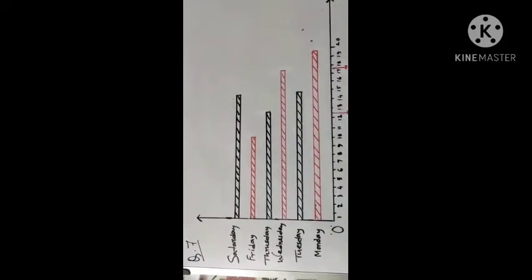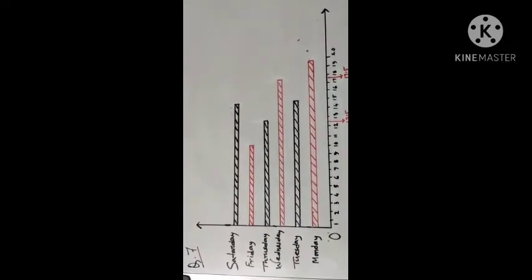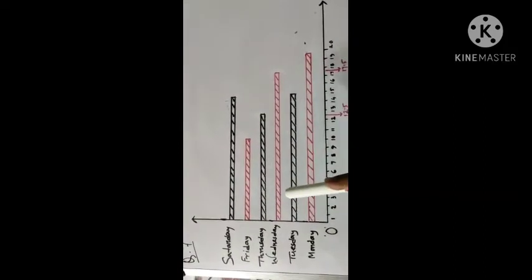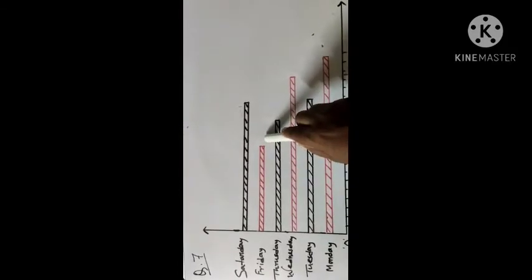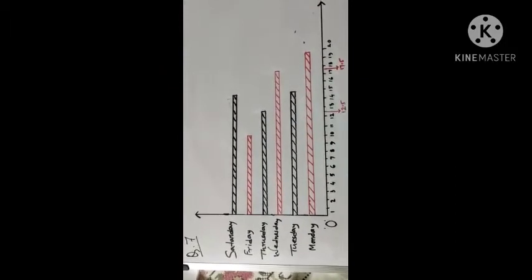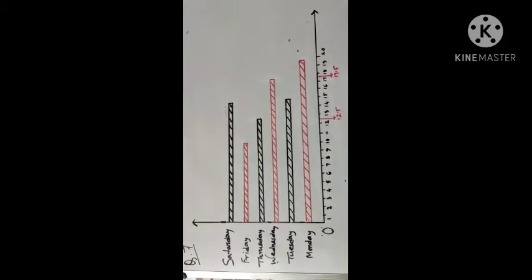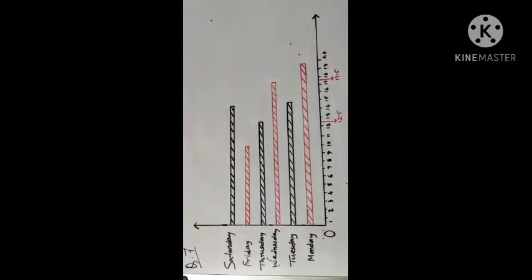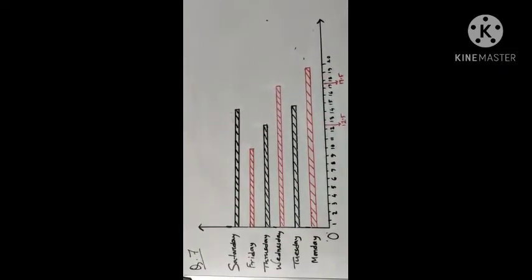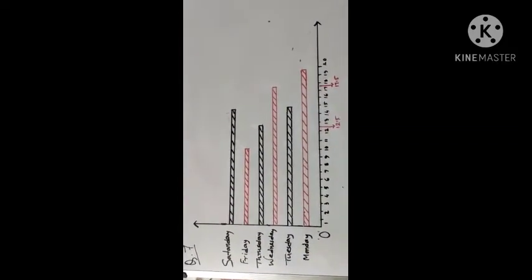On Friday, 20 bags are sold, so the length of the rectangle will be 10 units, and we draw a rectangle of length 10 units. On Saturday, 30 bags were sold, so the length of the rectangle will be 15 units, and we draw a rectangle of length 15 units.